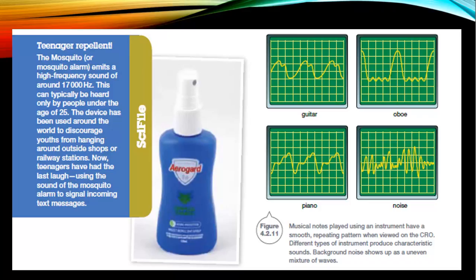This diagram here on the far right shows you what sound looks like through a CRO, which is an instrument used to represent sound waves. You can see that through a guitar, oboe, and piano, they're very different with the wavelengths, the amplitude, and all those other things that we've just talked about here.